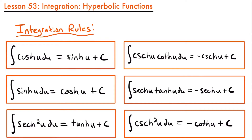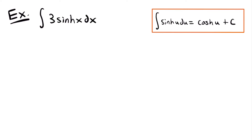These are all the basic integration rules we need to know for hyperbolic functions. Now let's look at some example problems. For our first example, we have the integral of 3·sinh(x) dx. To integrate this function, we just need to know the integration rule for hyperbolic sine. If we pull the constant multiple of 3 to the outside of the integral, we'll have 3 times the integral of sinh(x) dx.